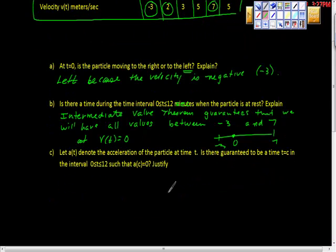The next part of the question says, let a of t denote the acceleration of the particle at time t. Is there a guarantee to be a time t equals c in the interval 0, I'm sorry, t is greater than 0, less than 12, such that a of c is equal to 0? And then it asks us to justify our answer. And the answer here is yes, isn't it? The answer here is yes.